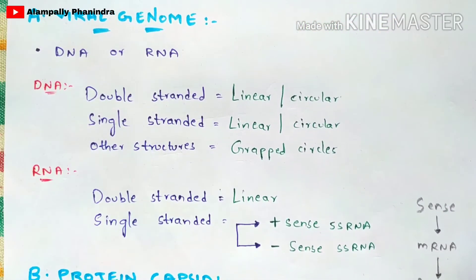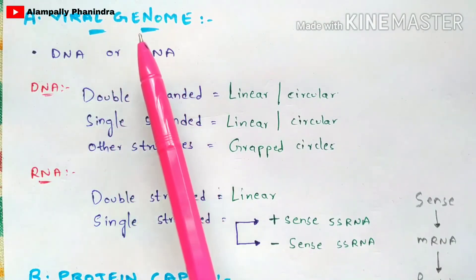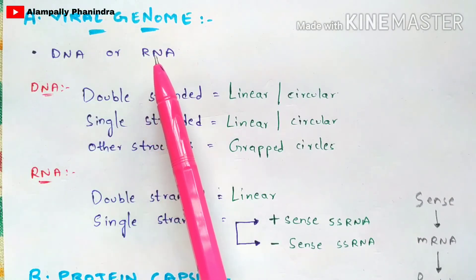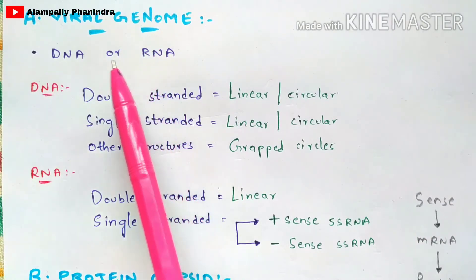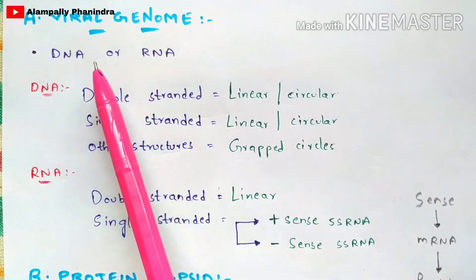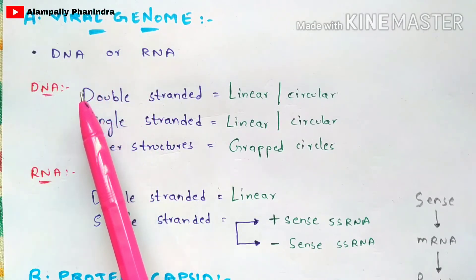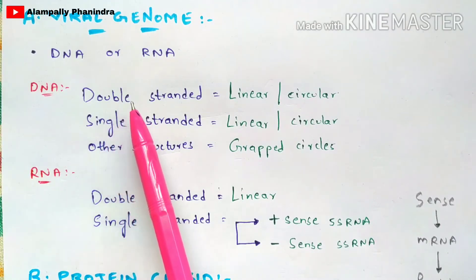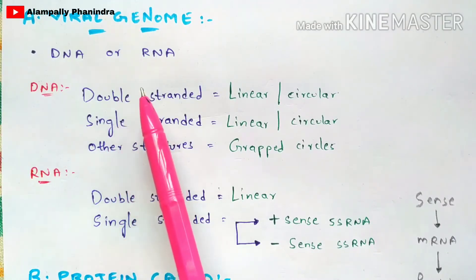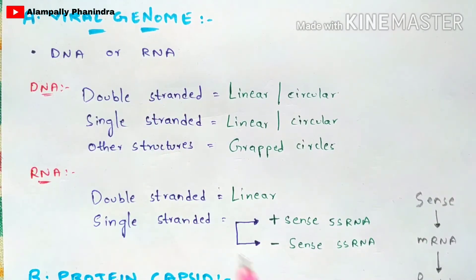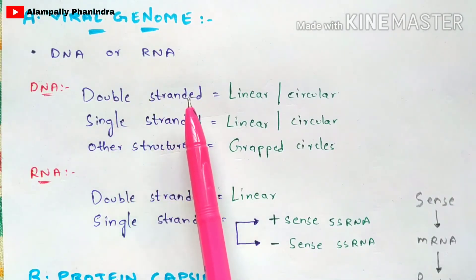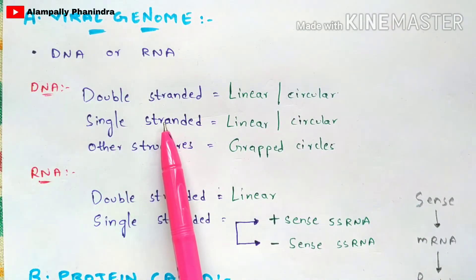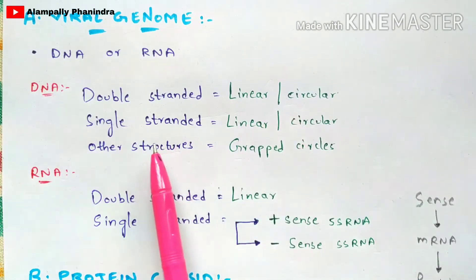The nucleic acid genome is also called the viral genome. The genome present in the virus may be either in the form of DNA or RNA. For DNA, it can be double-stranded or single-stranded, and each form can be either linear or circular.